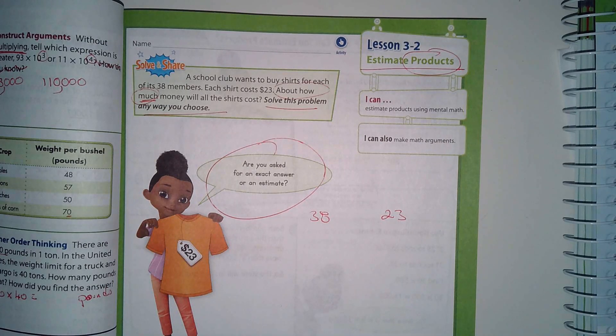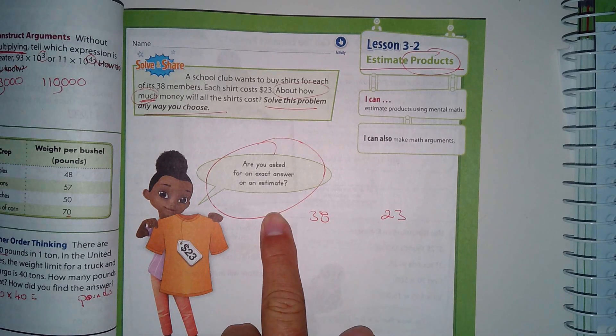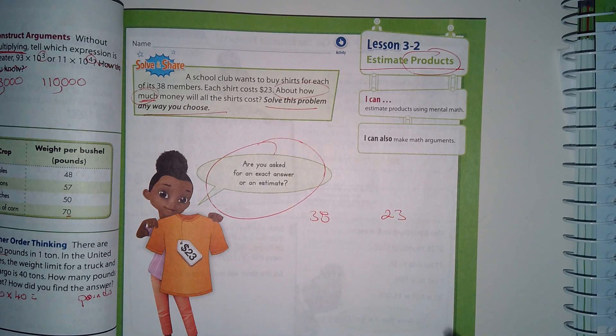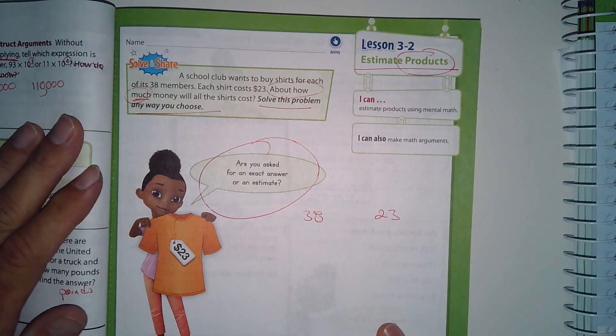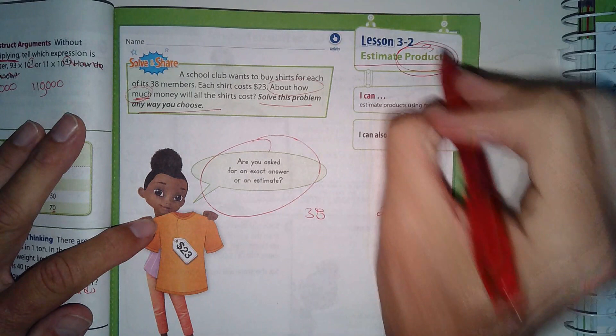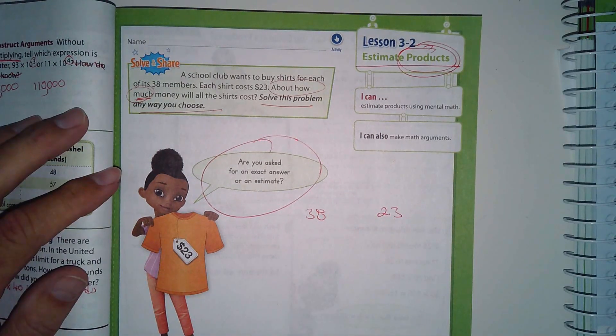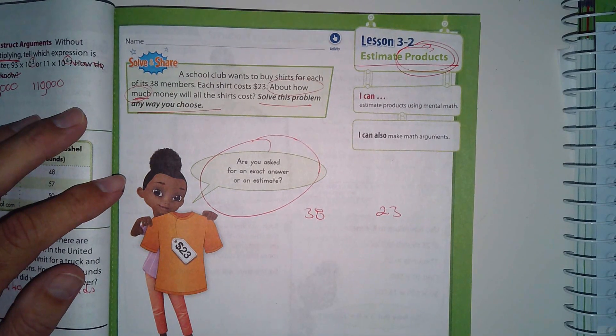All right, let's see if it's going to work this time. Is it showing? Yes, it's working. Okay, so we're going to do lessons 3-2 and 3-3. Lesson 3-2 is simply about estimating products. We've done estimation before, and when we're talking about products, we're talking about two numbers that are being multiplied together.